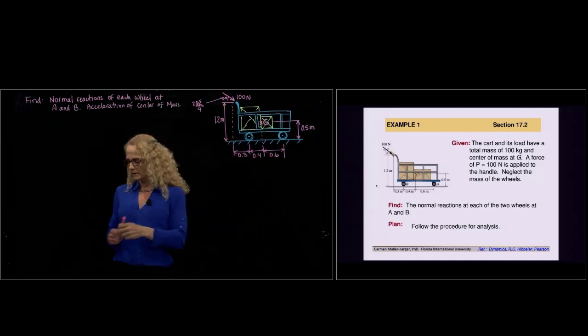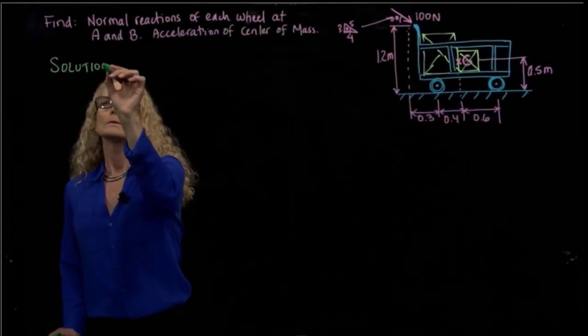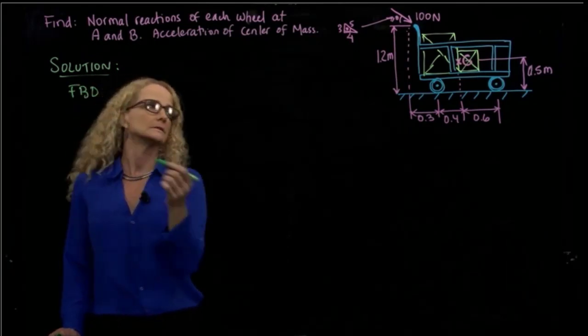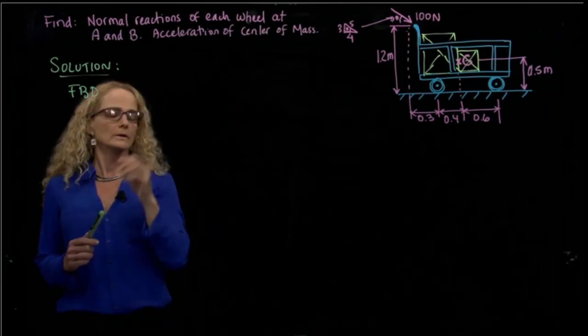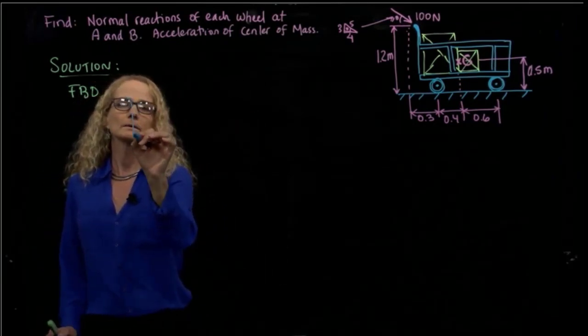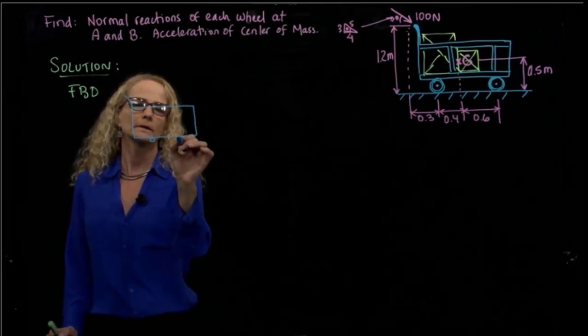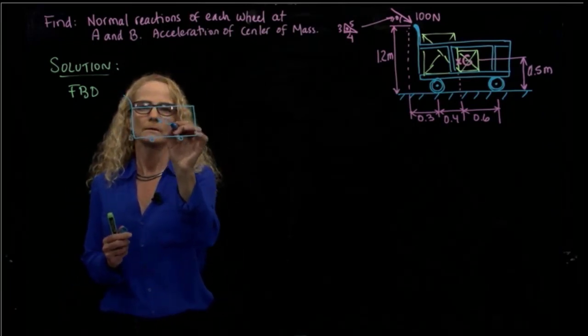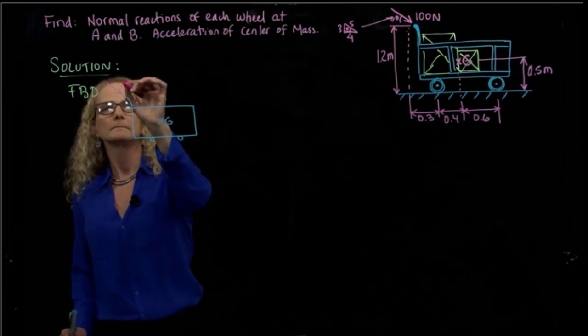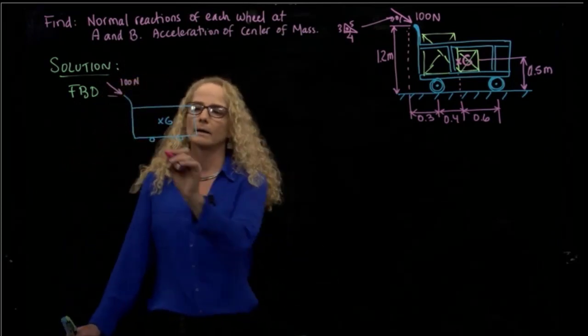So what do we do here? The solution: the first thing that we always do is the free-body diagram of our system. So I'm going to do a little bit simplified version of our system. We have two wheels right here and a center of mass right here, and I have my applied force.